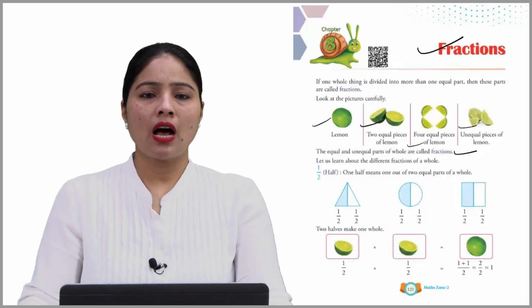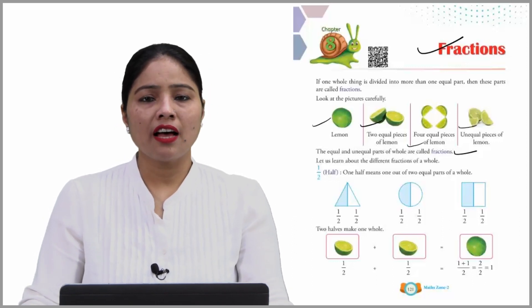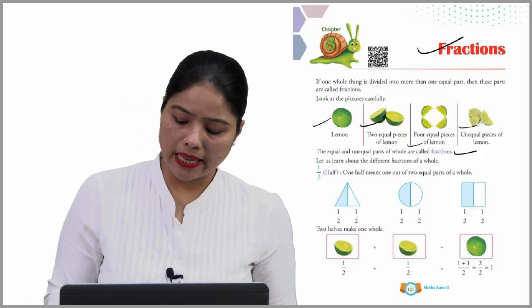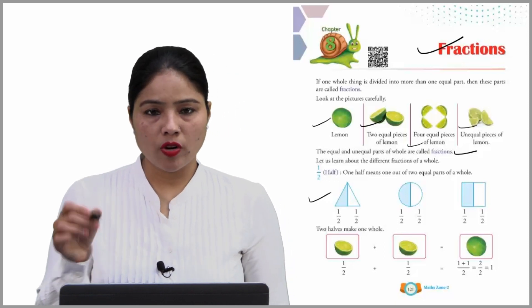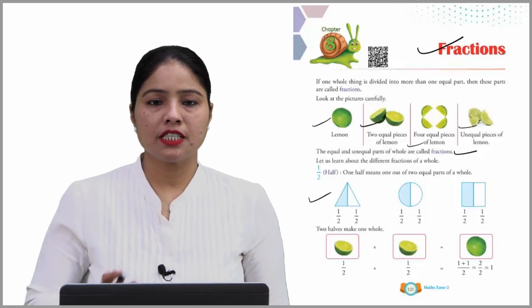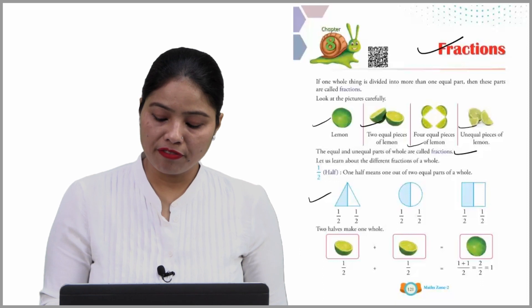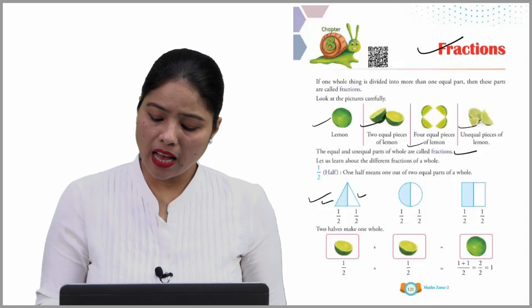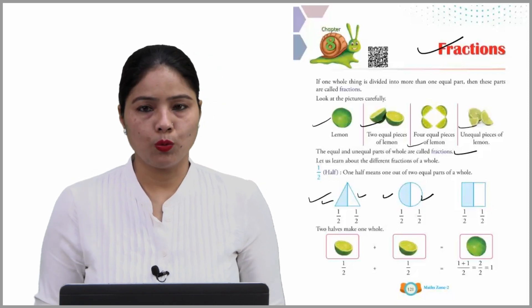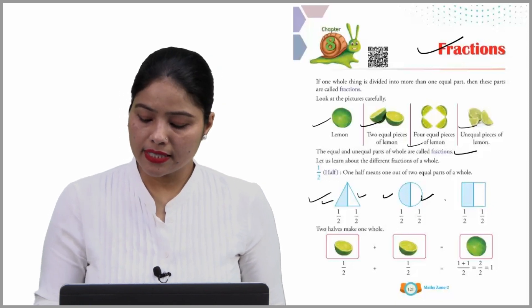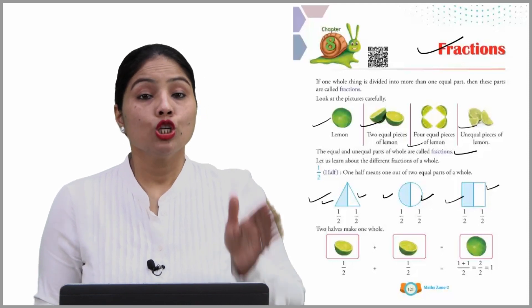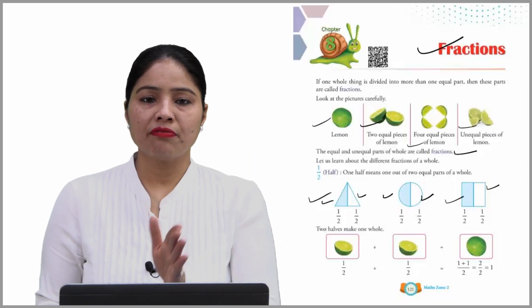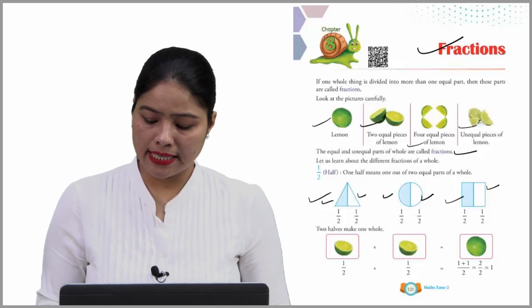सबसे पहले आता है, बच्चो — half. One half means one out of two equal parts of a whole. This is a triangle and it is divided in the middle — this is half part and this is also half part. Similarly, this is a circle — this is half part and this is half part too. And this is a rectangle — this is half part and this is again half part. So, two halves make one whole. दो half मिलके हमारा one whole बनाते हैं.